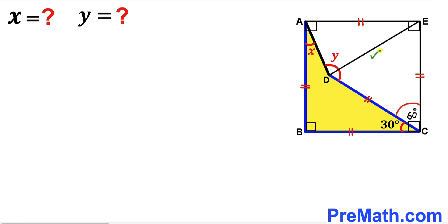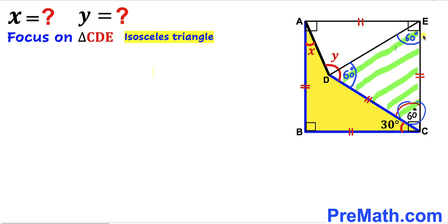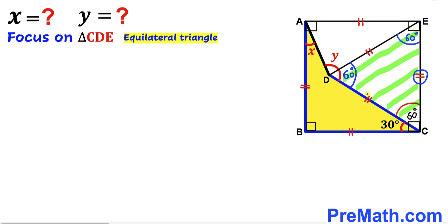Let's focus on triangle CDE. This is an isosceles triangle since CD equals CE, so angles CDE and CED are congruent. Since angle DCE is 60 degrees, the other two angles must each be 60 degrees as well. Therefore triangle CDE is equilateral, meaning all three side lengths CD, DE, and CE are equal.